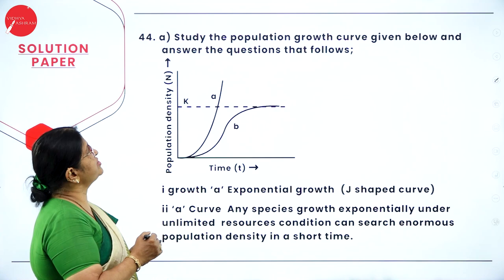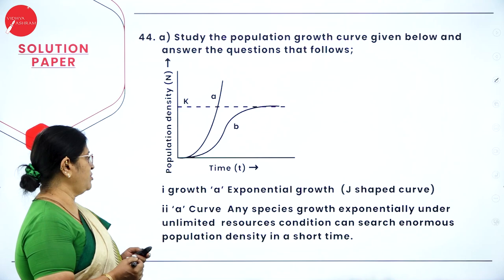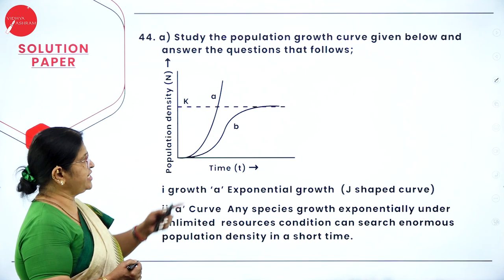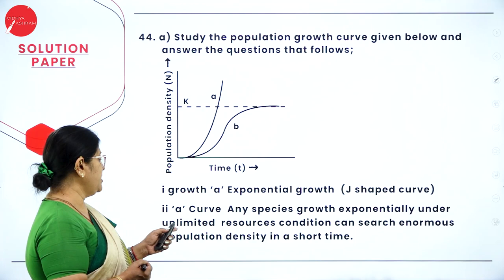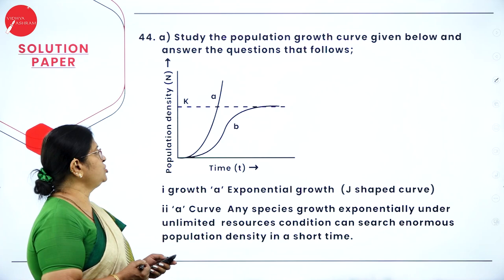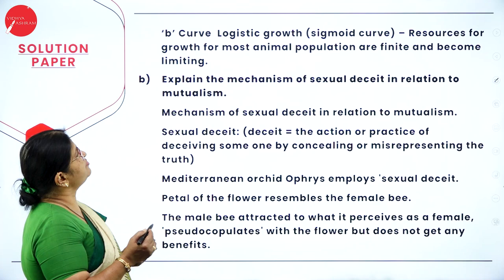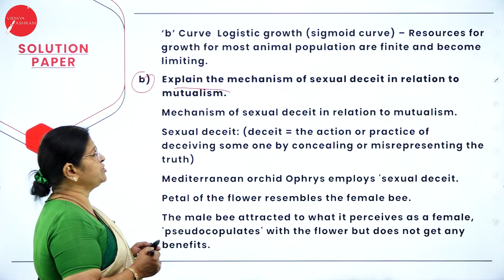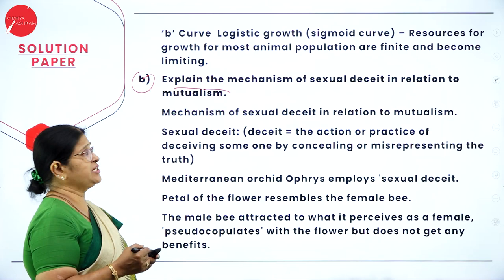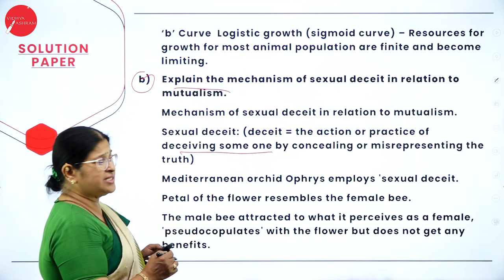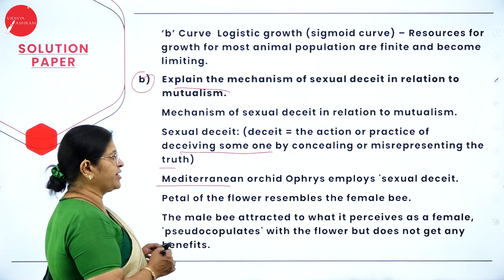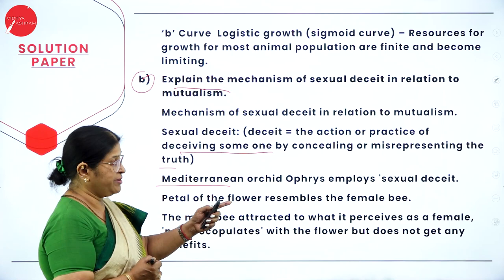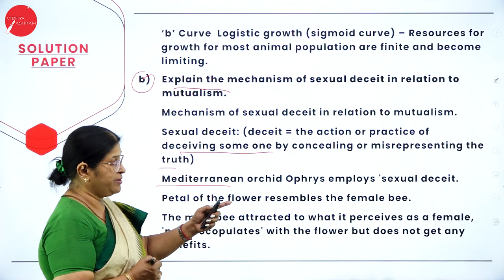Question 44: study the population growth curve — curve A is exponential (J-shaped) growth under unlimited resource conditions; curve B is logistic (sigmoid/S-shaped) growth where resources become limiting. The split part asks to explain the mechanism of sexual deceit in relation to mutualism — the Mediterranean orchid Ophrys employs sexual deceit: its petals resemble a female bee, the male bee is attracted and pseudo-copulates with it; the flower benefits but the bee does not get any benefits.